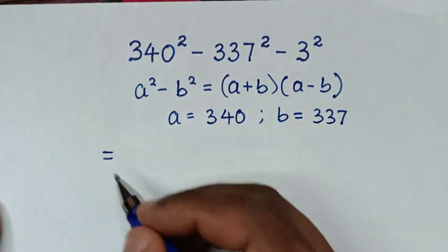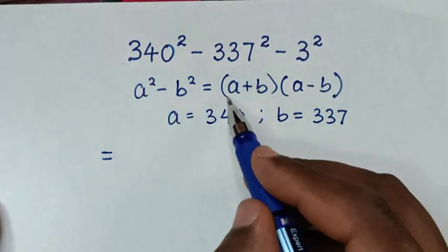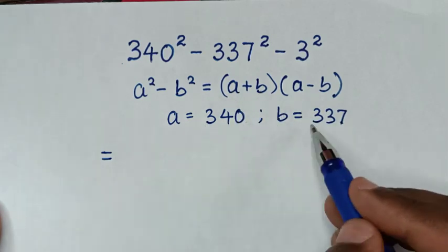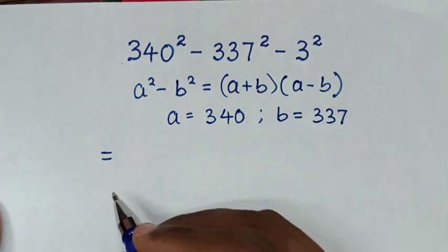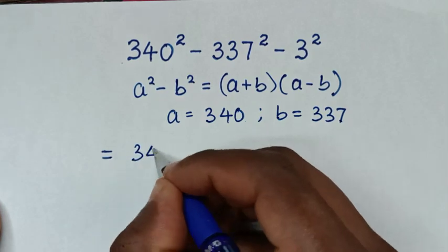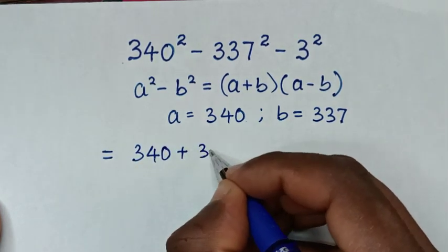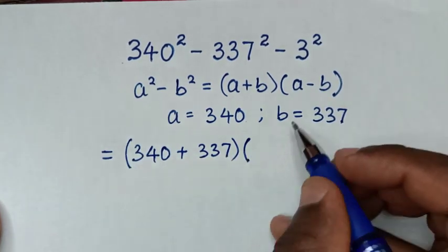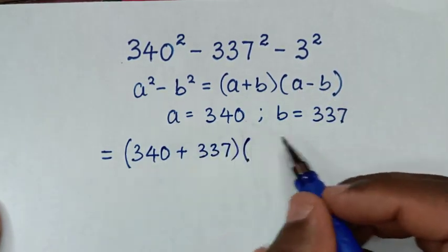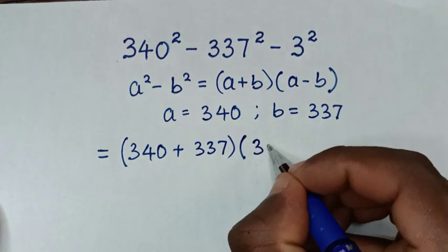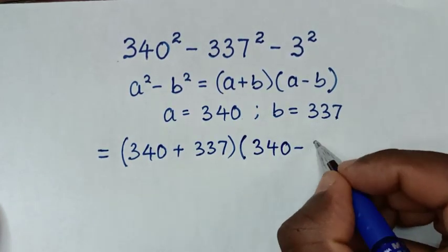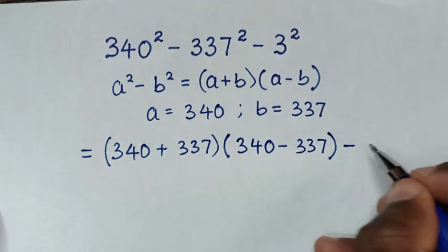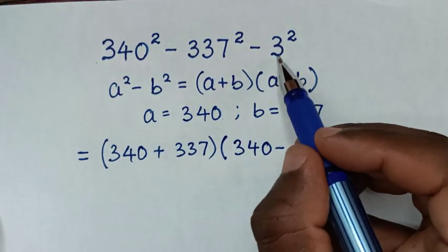Then applying this form, it will be equal to (a + b), which is (340 + 337), times (a - b), which is (340 - 337), then minus 3², which is 9.